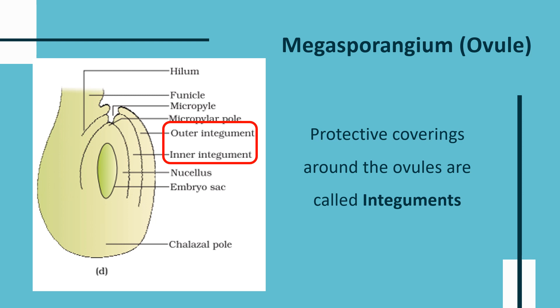The first type is the ategmic ovule, having no covering. The second is the unitegmic ovule, having one protective covering. The third is the bitegmic ovule, having two protective coverings, as shown in the example here. The last one is the tritegmic ovule, with three integuments.